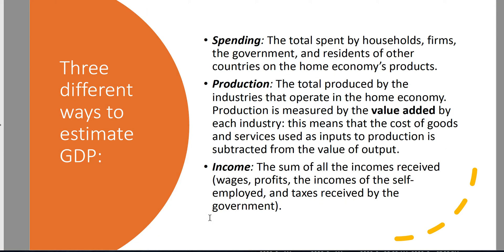We can measure GDP in three different ways: spending, production, and income. Spending is the total amount spent by households, firms, the government, and residents on our home economy's products — whatever we're buying and selling here at home. Or you could look at production — how much we produce in the industries operated in the home economy, looking at value added by each industry, where the cost of goods and services used as inputs to production is subtracted away.